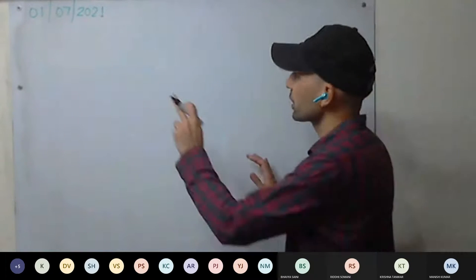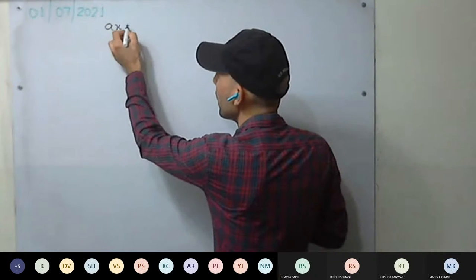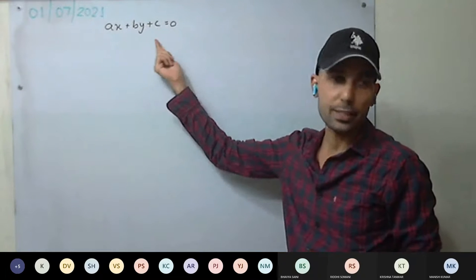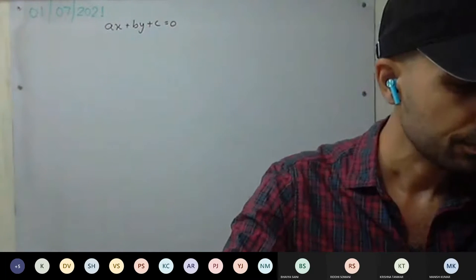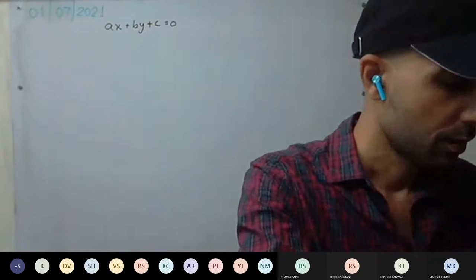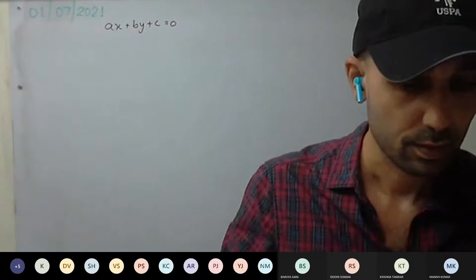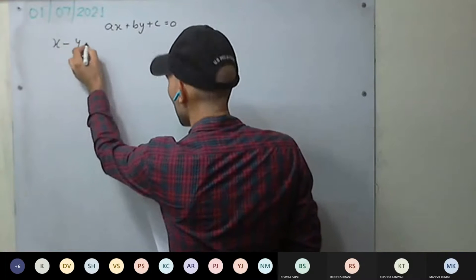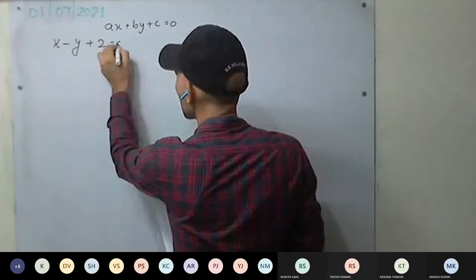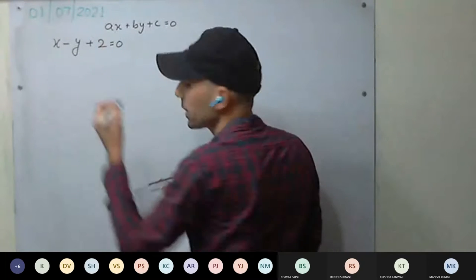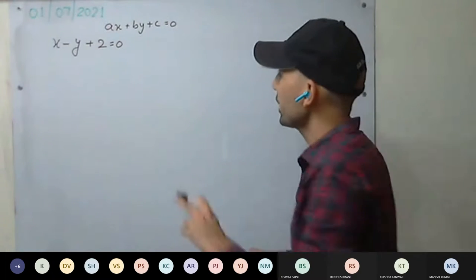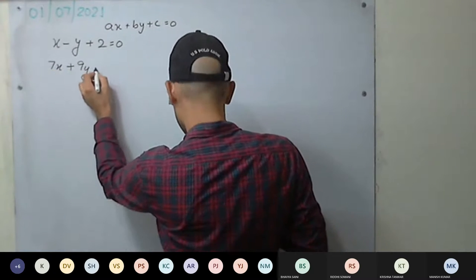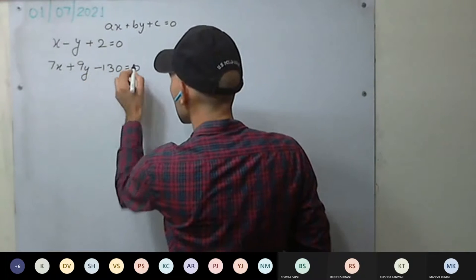First we'll be writing the equation. If the equation is not in the form of ax plus by plus c equal to zero, then we'll convert it into this form. Both equations will be written in this form. So: x minus y minus 2 plus 2 equal to 0 is the first equation. Second equation: 7x plus 9y minus 130 equal to 0.